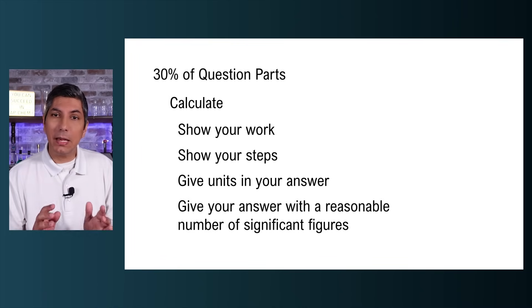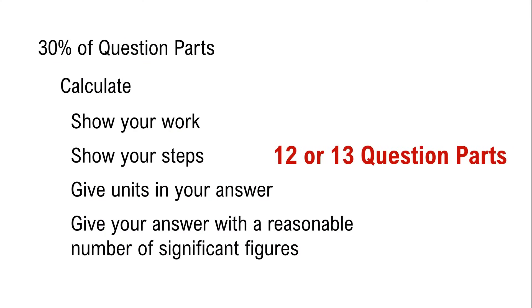Pretty much every measured quantity we use except for equilibrium constants and pH values has to have units. Remember to give your answer with a reasonable number of significant figures. This is a chemistry exam, not a significant figures test. A good rule of thumb is however many significant figures are in the numbers in the problem should be the number of significant figures you use in your answer. If there are different numbers of significant figures in the problem, always go with the least number. And if you're not sure how many significant figures to use, just use three — that will be within the level of tolerance for any calculation problem on the AP exam. Expect to see about 12 or 13 questions on the free response section where you have to calculate.